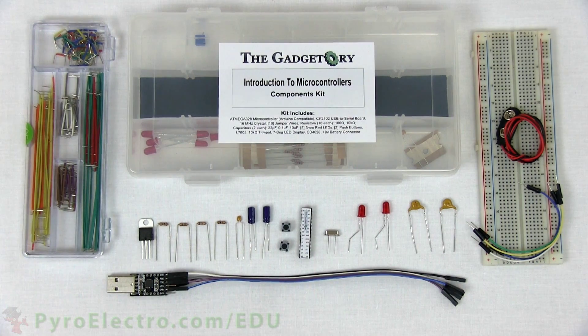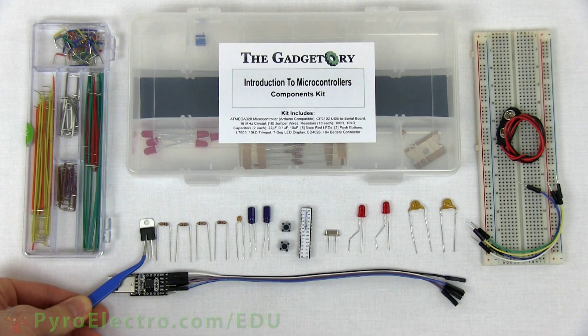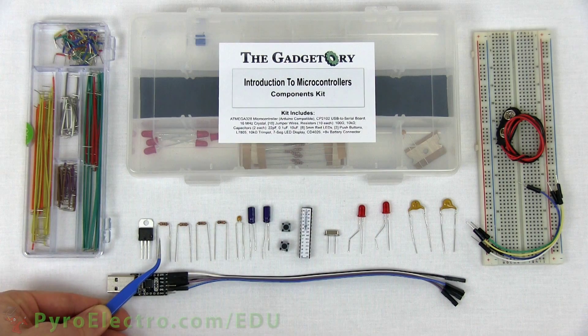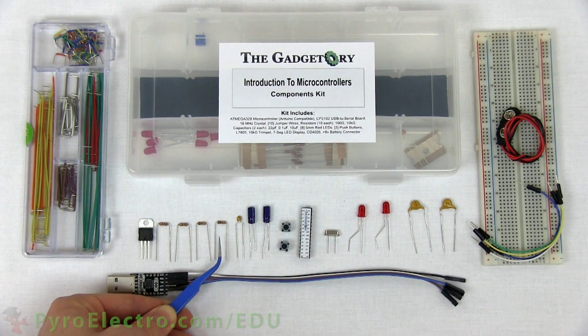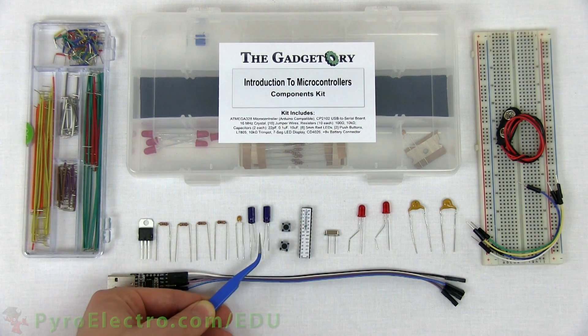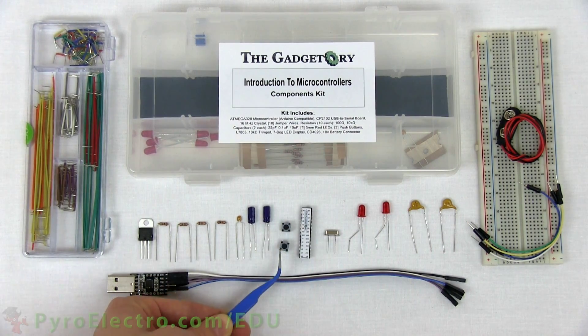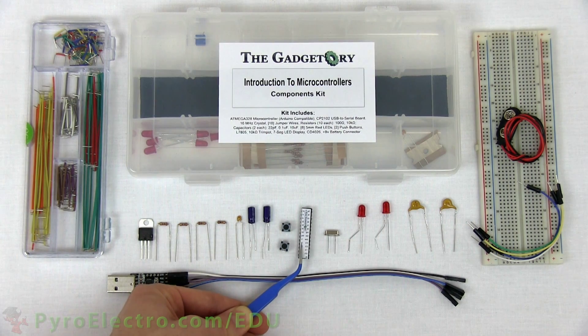Specifically from the parts kit, we'll be using one 7805 plus 5 volt regulator, two 100 ohm resistors, two 10 kilo ohm resistors, one 0.1 microfarad capacitor, two 10 microfarad capacitors, two push buttons, an ATmega328 microcontroller with Arduino compatible bootloader, a 16 megahertz crystal,